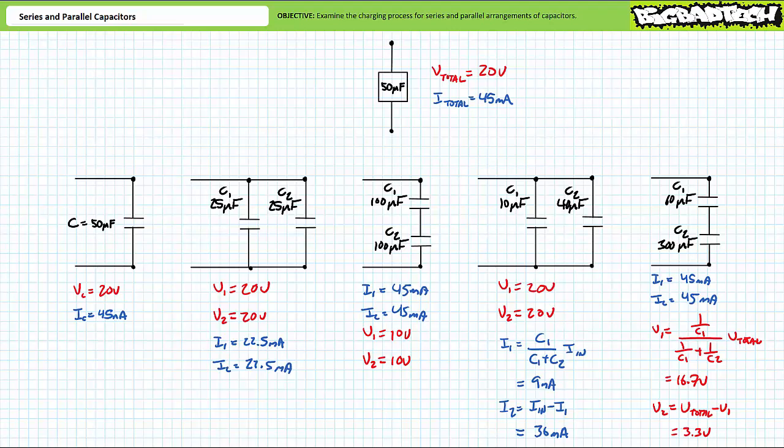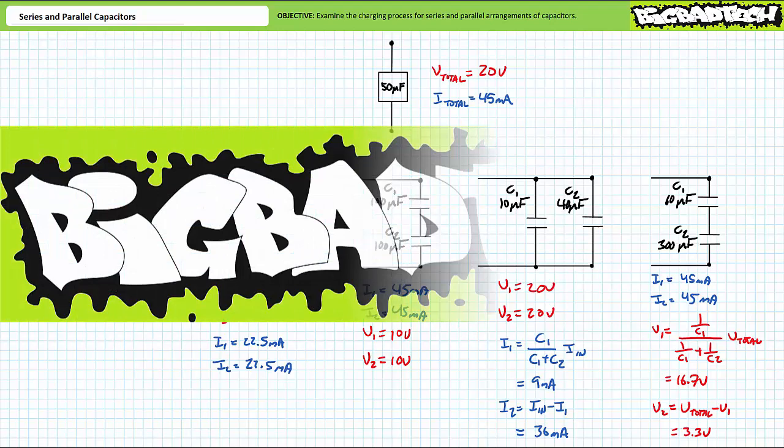In conclusion, we examined the dirty details of series and parallel relationships of capacitors. The total capacitance figure can be used to determine the general behavior of the charging process; after that, series and parallel properties determine the behavior of individual elements. The largest capacitor in a parallel relationship draws the largest current, and the smallest capacitor in a series relationship experiences the largest voltage drop. Thank you for your attention and interest — check out the Big Bad Tech channel for additional resources and updates.